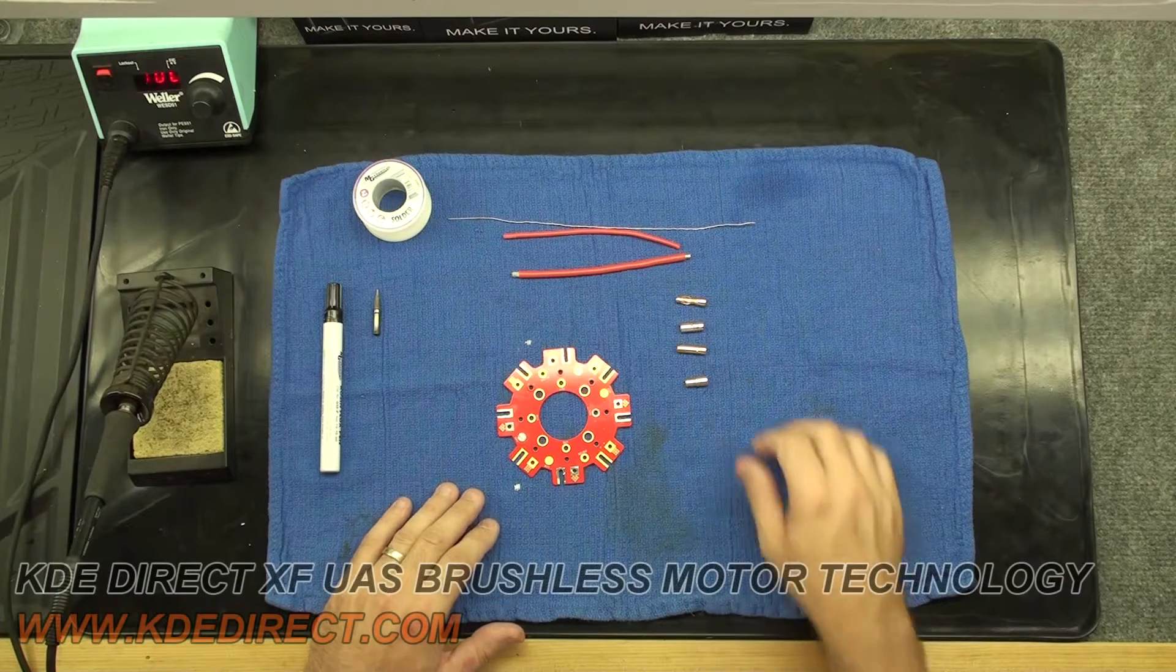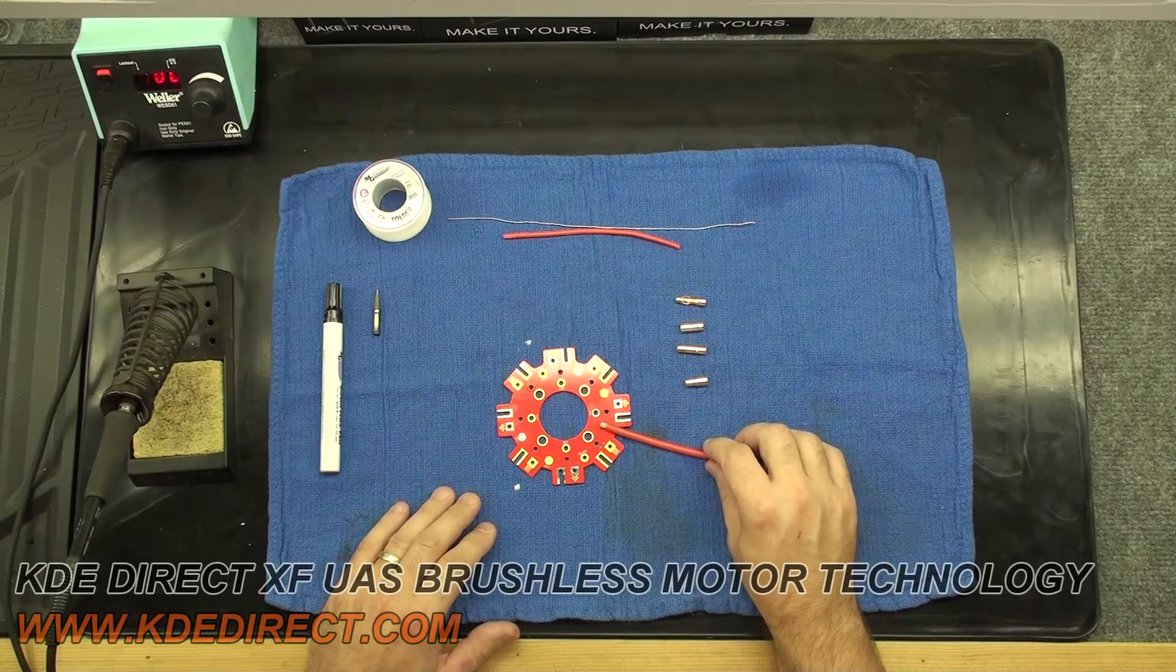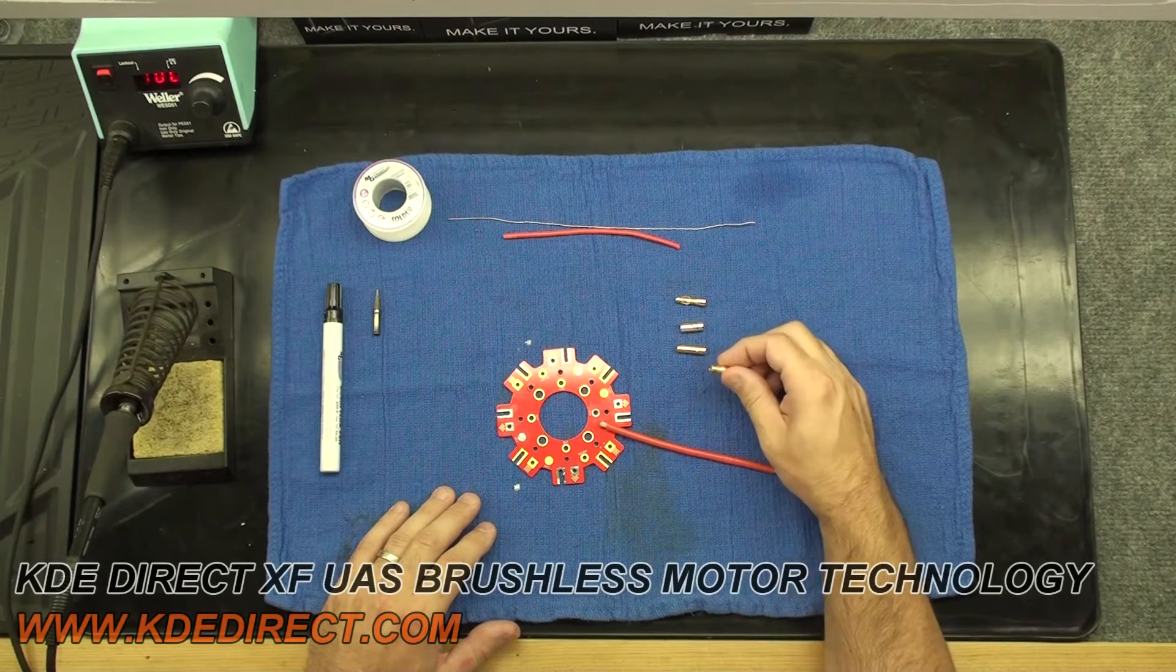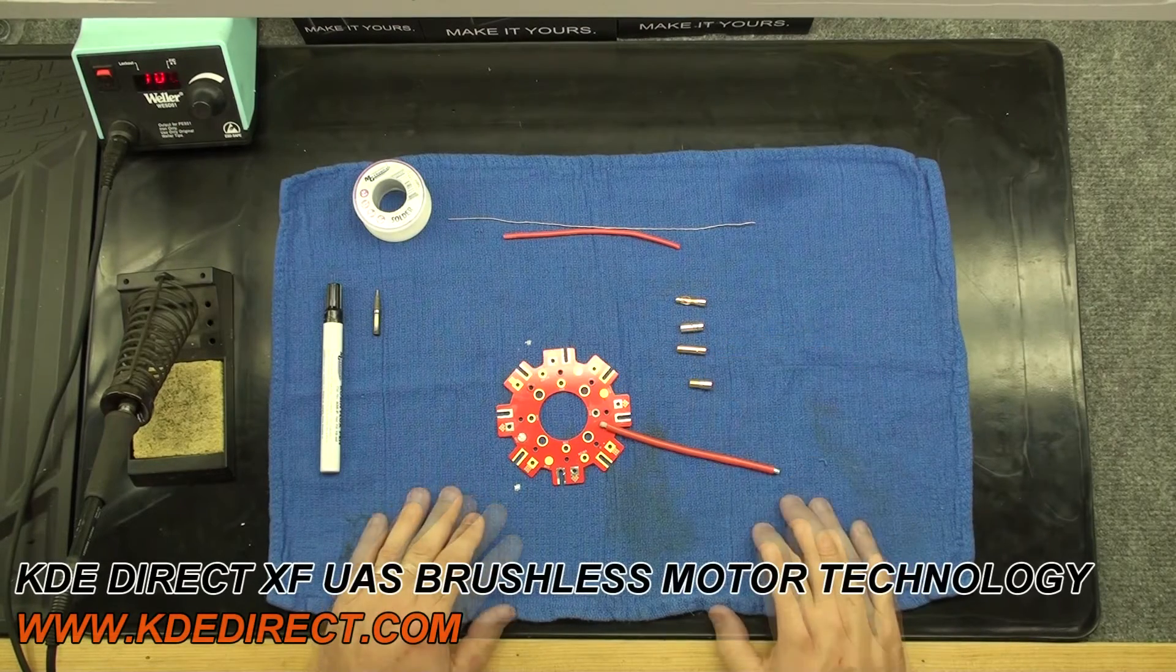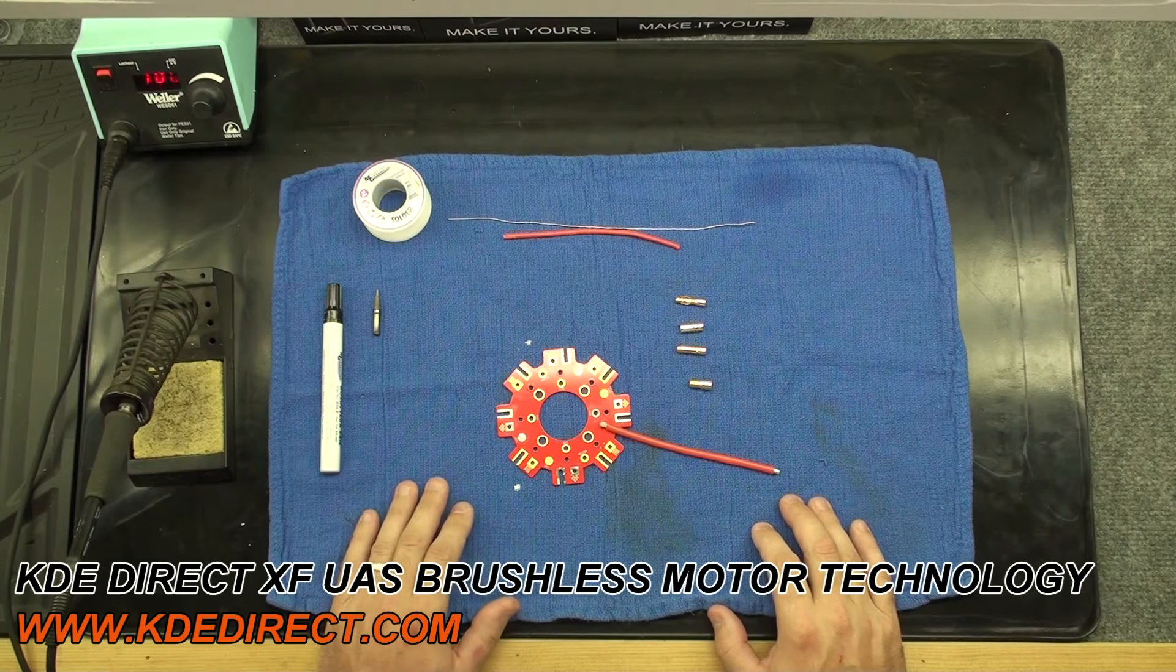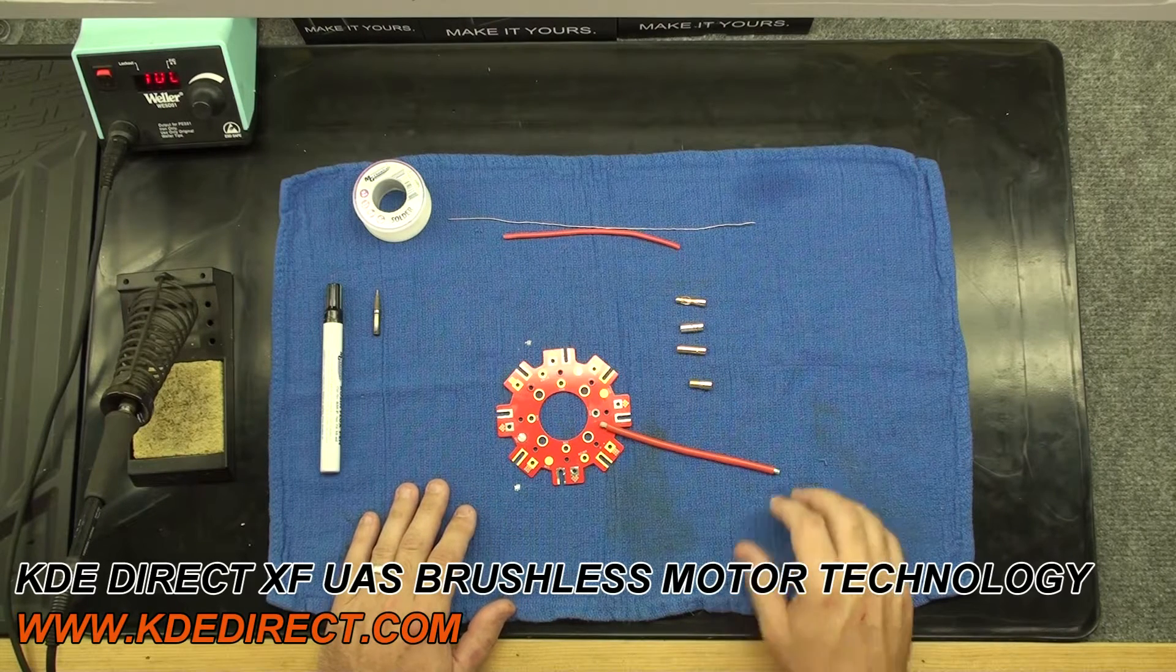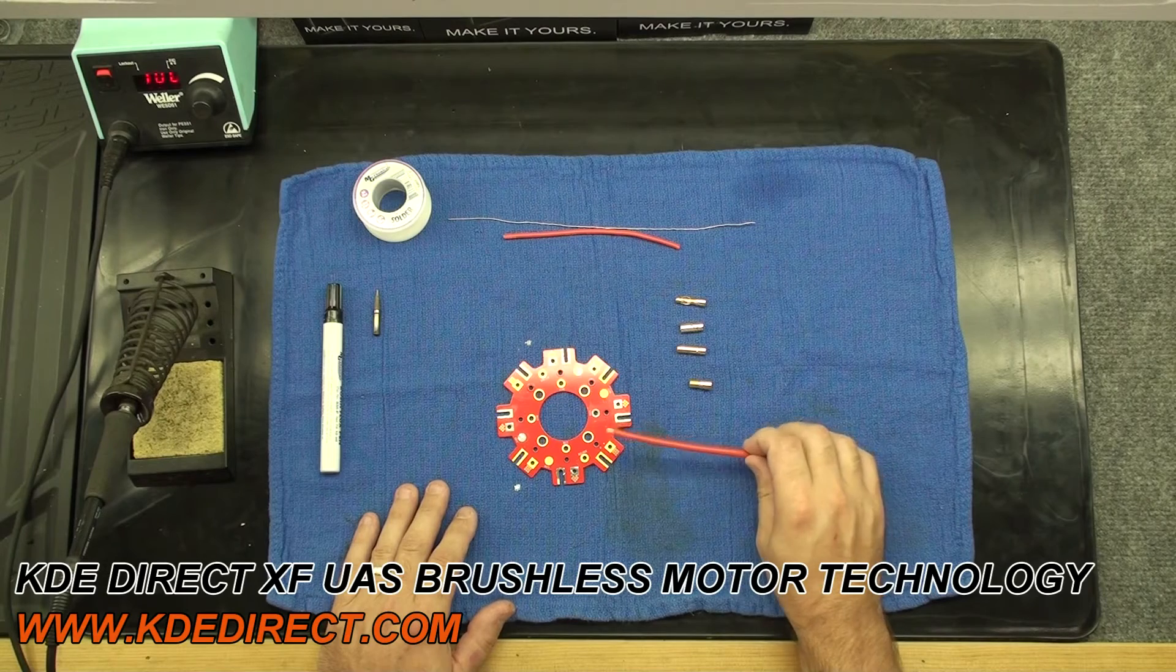Today I'll be showing you how to solder a wire to a power distribution board and also how to solder a wire to a bullet connector. These are the two most common connections on a platform that need to be soldered. We'll be showing you some techniques today on how to properly do this.